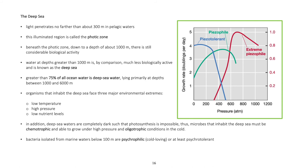The deep sea: Light penetrates no farther than about 300 meters in pelagic waters; this illuminated region is called the photic zone. Beneath the photic zone, down to about 1,000 meters, there is still considerable biological activity. Water at depths greater than 1,000 meters is much less biologically active and is known as the deep sea. Greater than 75% of all ocean water is deep sea water, lying primarily at depths between 1,000 and 6,000 meters. Organisms that inhabit the deep sea face three major environmental extremes: low temperature, high pressure, and low nutrient levels. Deep sea waters are completely dark such that photosynthesis is impossible; thus, microbes must be chemotrophic and able to grow under high pressure and oligotrophic conditions in the cold.